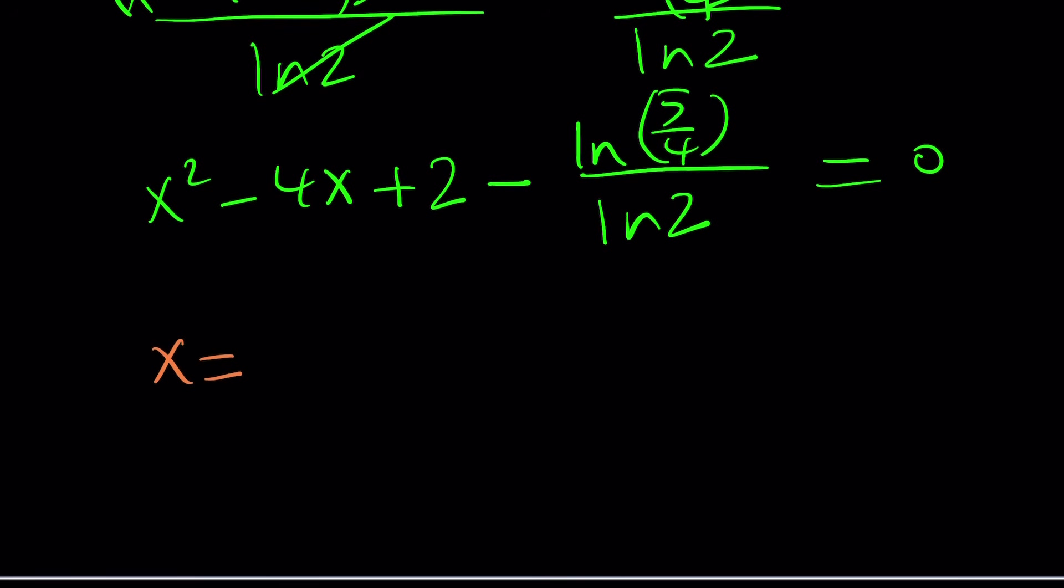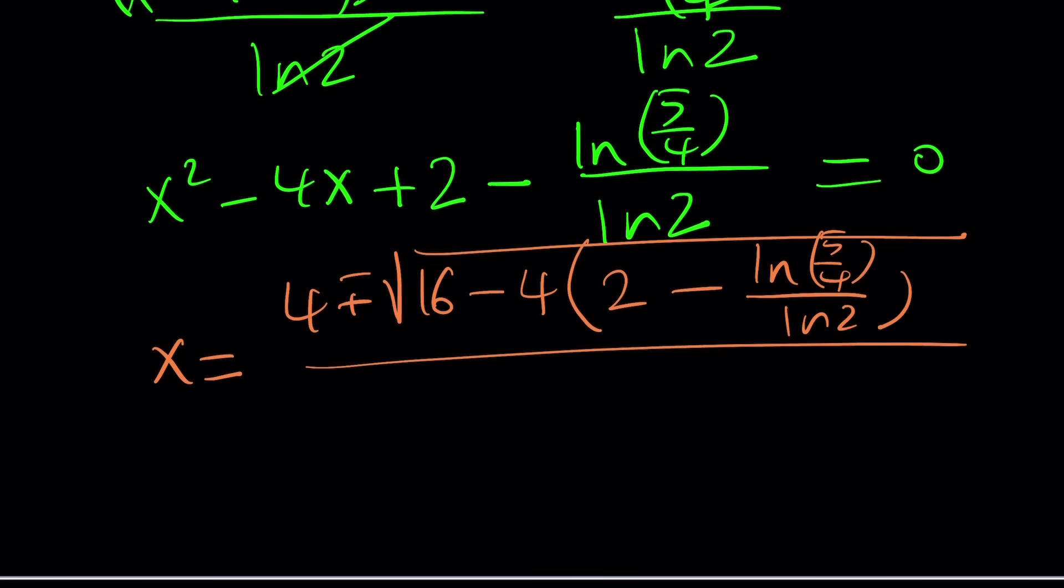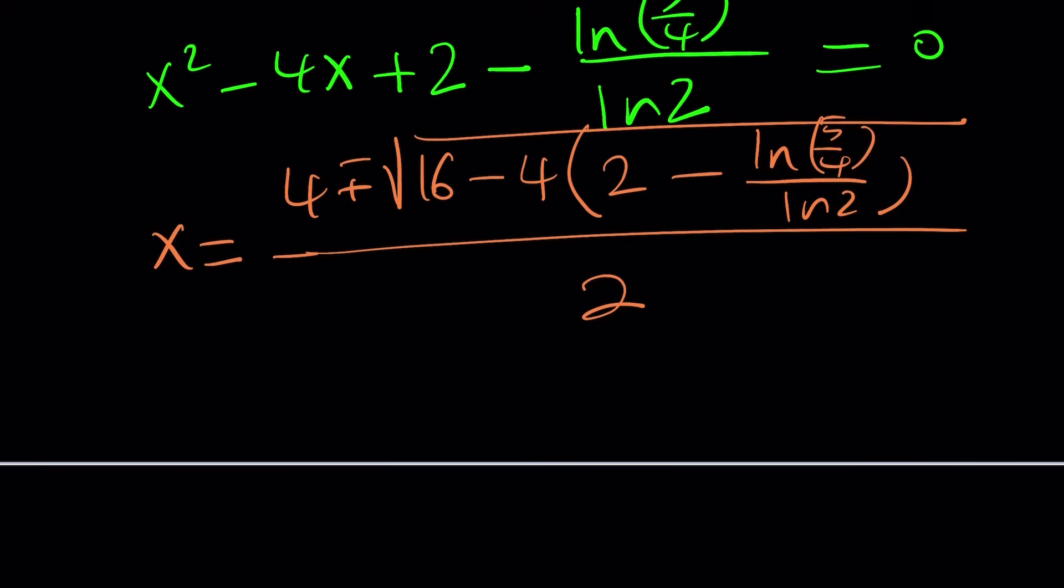So x equals negative b four plus minus the square root of b squared, which is 16, minus 4ac. a is 1, so we don't need to worry about it. But c is kind of complicated, isn't it? Something like this. This is where the complications come in. And all of that is divided by 2a, which is 2. Awesome. You like that?